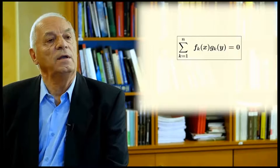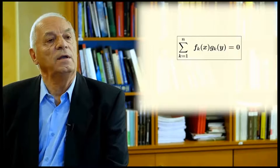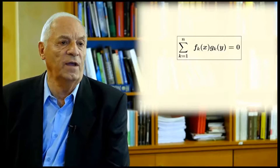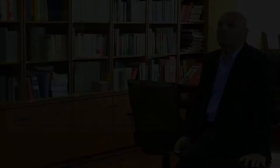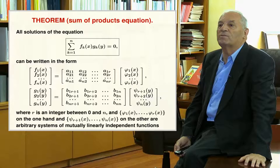The sum of products equation involves two sets of functions: one is a function of x and the other is a function of y. We multiply them, add up all of them, and the sum has to be zero. The theorem we present next introduces this functional equation and provides a general solution, which can be constructed very easily. The f functions depend on a single variable x and the g functions depend on a single variable y. The condition of adding up to zero forces some relations among the functions.